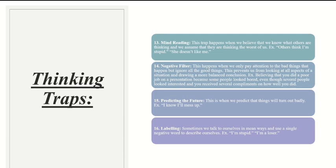Number fifteen is predicting the future — when we predict things will turn out badly, like 'I know I'll mess up,' before it even happens. Number sixteen is labeling — when we talk to ourselves in mean ways, using a single negative word to describe ourselves, like 'I'm stupid,' 'I'm a loser,' or 'Nobody's going to like me.' Understanding that these thoughts are going through your brain is totally normal; just try to neutralize them by knowing they're irrational and not intentionally true.